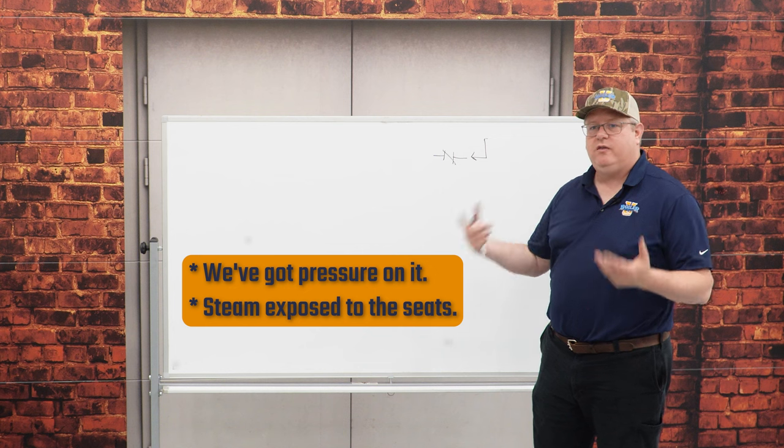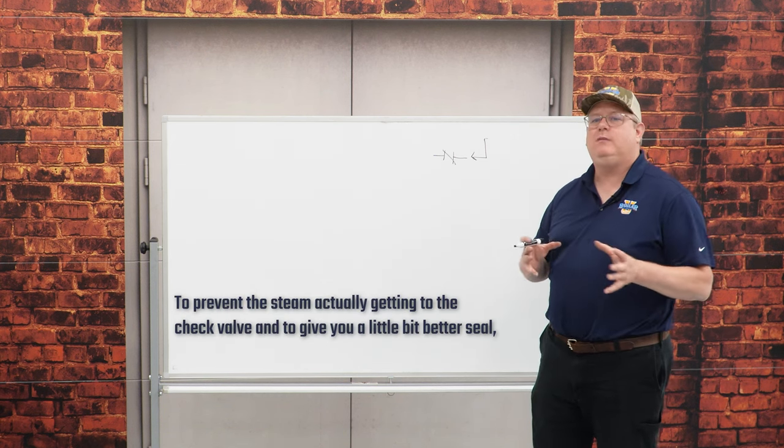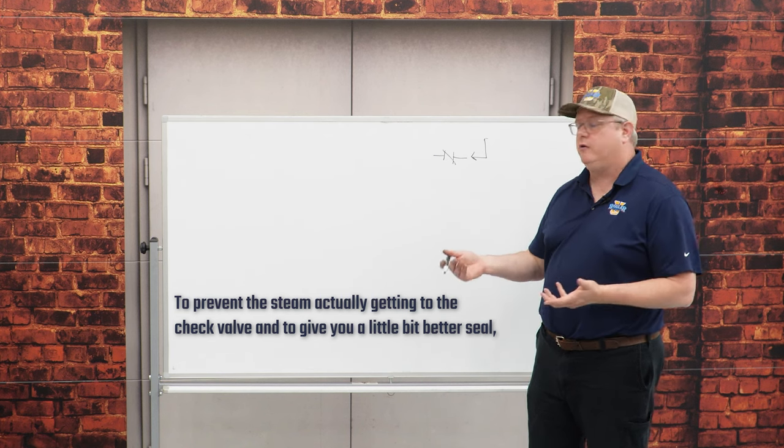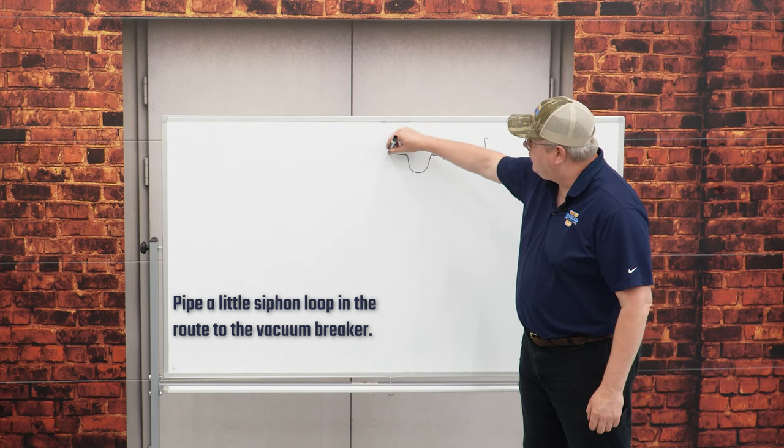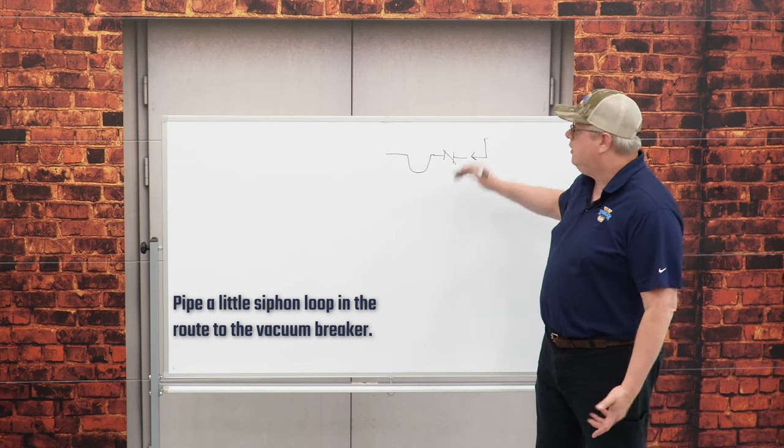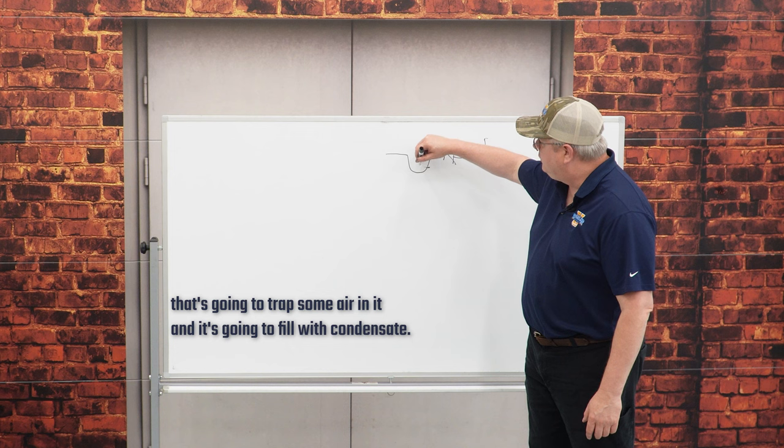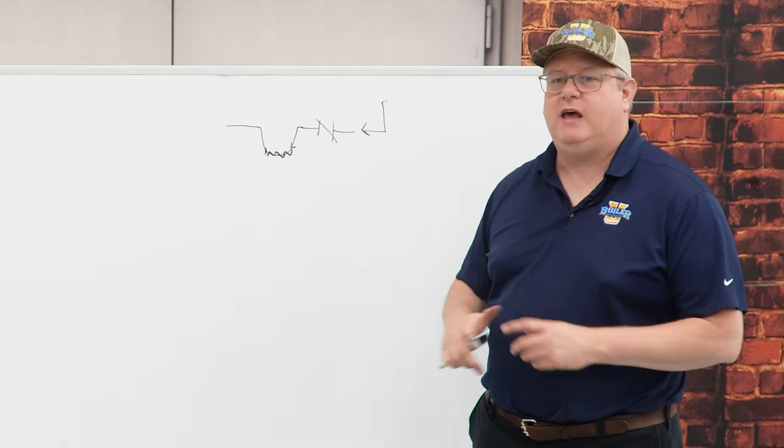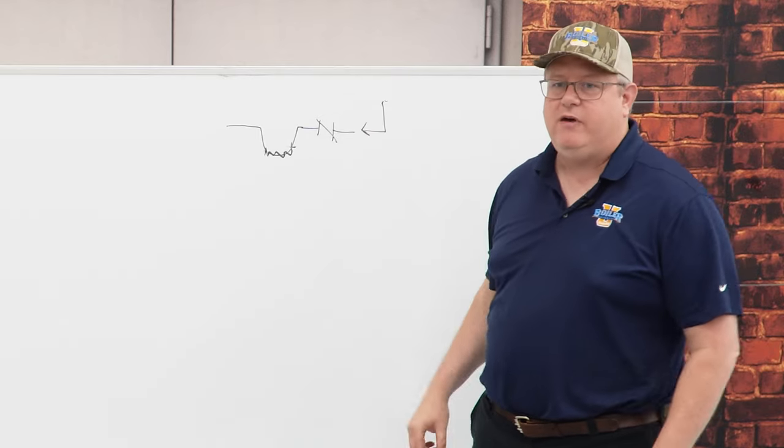So to prevent the steam actually getting to the check valve and to give you a little bit better seal, you can actually pipe a little siphon loop in the route to the vacuum breaker. What that will mean is when we start up, that's going to trap some air in it and it's going to fill with condensate, so we're much less likely to have rapid deterioration of that vacuum breaker check valve.